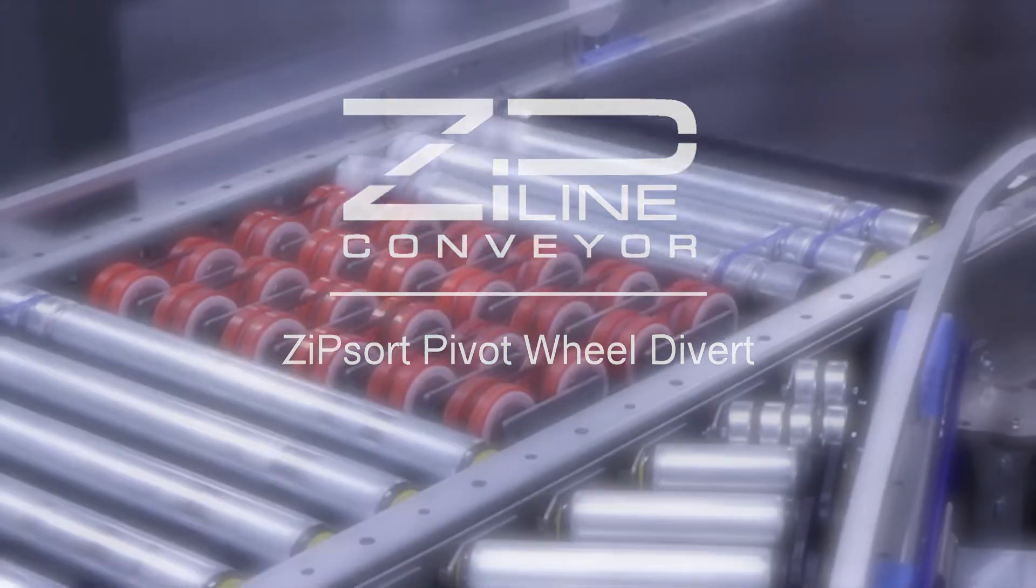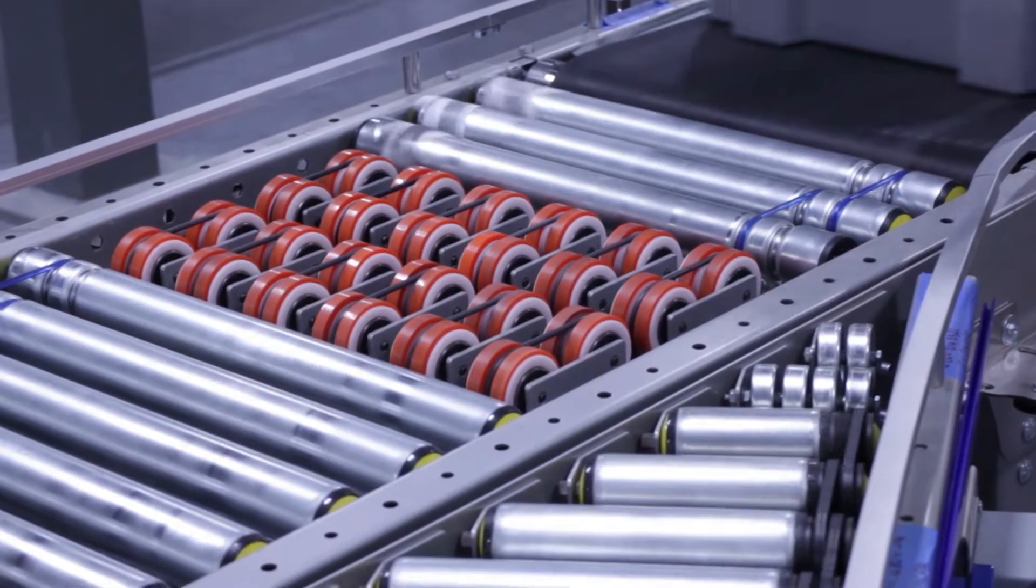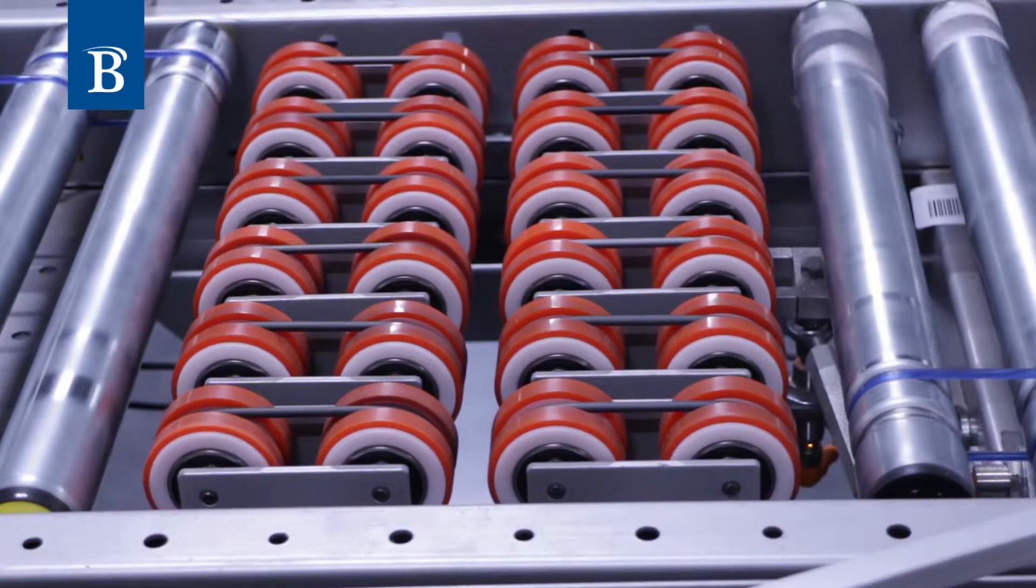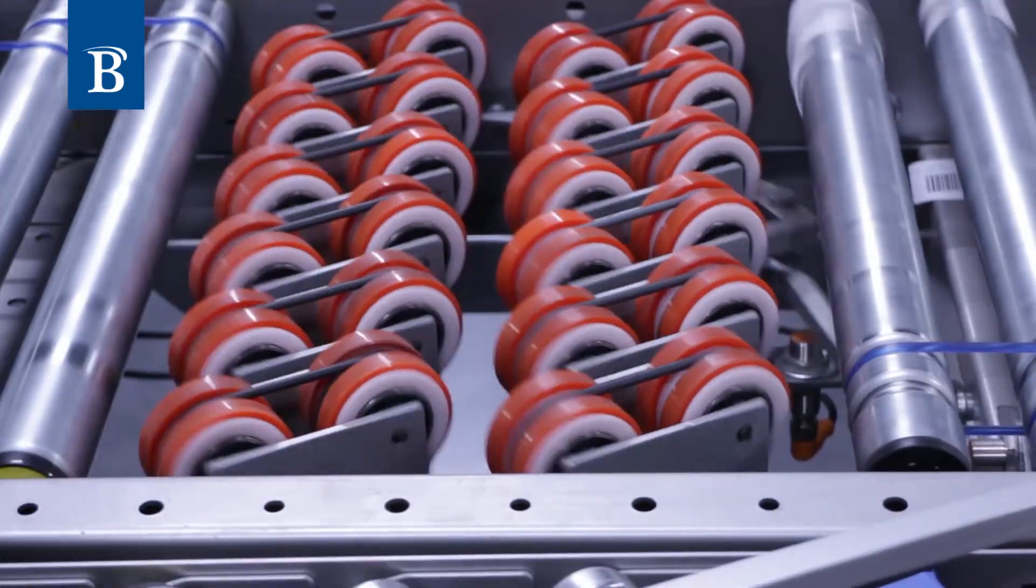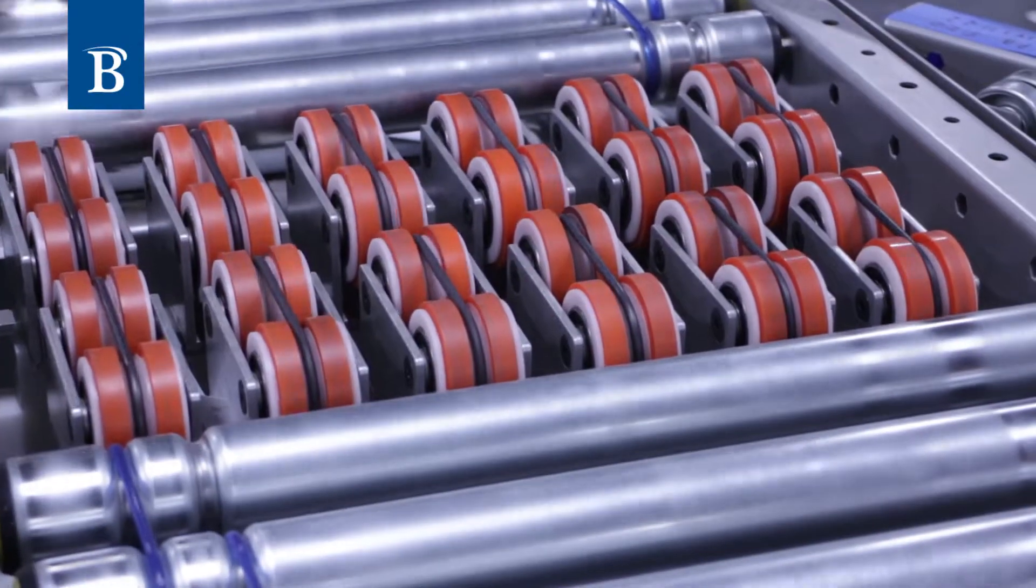The Zipline Conveyor ZipSort Pivot Wheel Divert is a cost-effective solution for sorting medium-sized totes or boxes. It is a great solution for conveyor systems requiring a single divert or where there is a large distance between diverts.